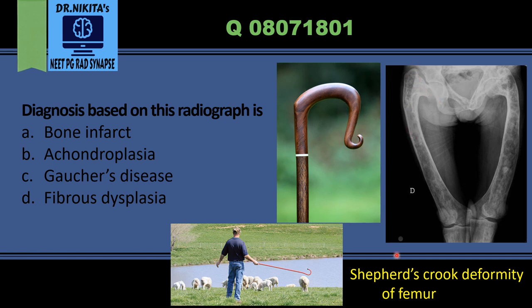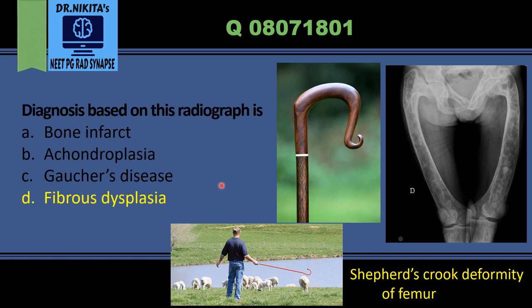Shepherd's Crook deformity is seen in fibrous dysplasia. Another important thing to remember about fibrous dysplasia is the ground glass matrix, which occurs because the bone is replaced by fibrous stroma and immature osteoblasts, giving a ground glass matrix appearance.